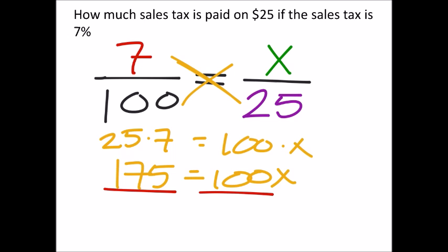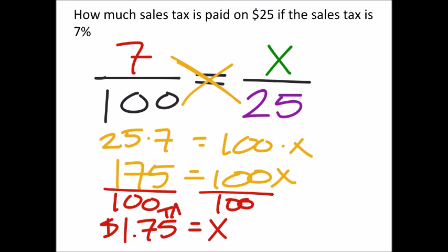And to solve, we'll divide by 100. Solving for x gives me 1.75. So it looks like the tax is $1.75.